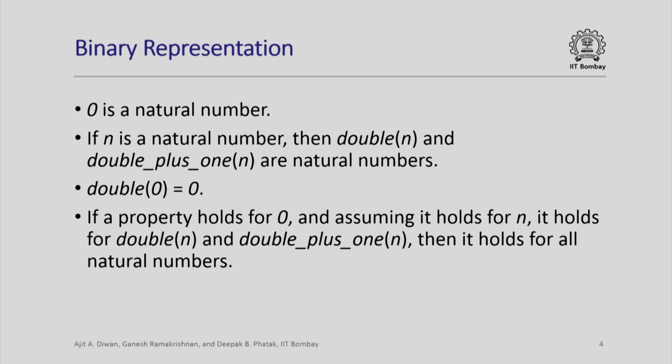So how do we define numbers using binary representation? The idea is similar: we first define that 0 is a natural number. Now we have two operations rather than just one. If n is a natural number, then double of n and double_plus_1 of n are also natural numbers. We have the additional property that double of 0 is defined to be 0.